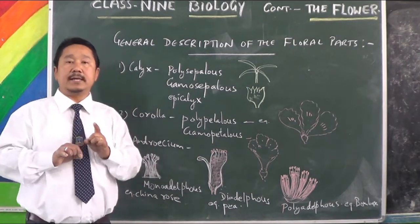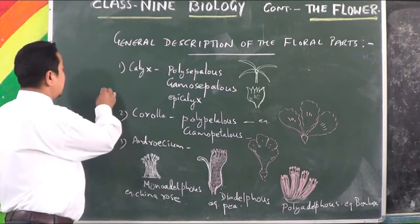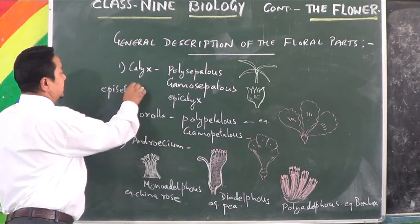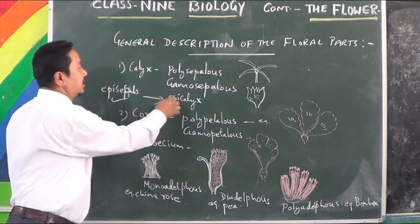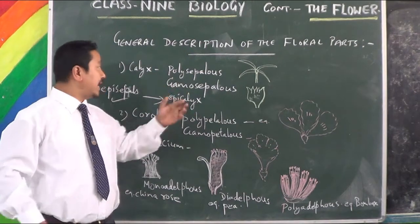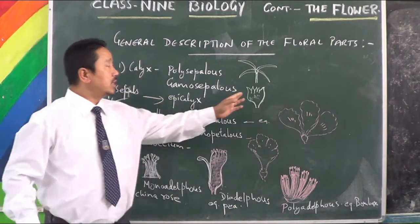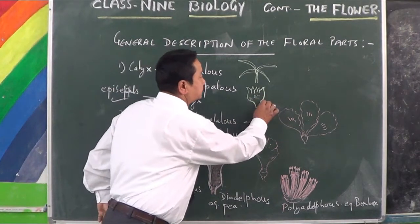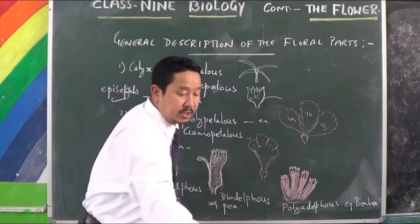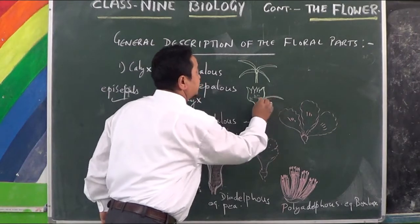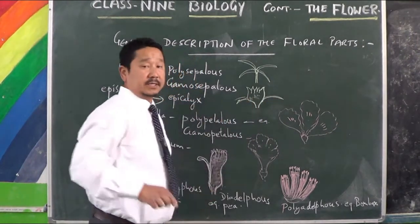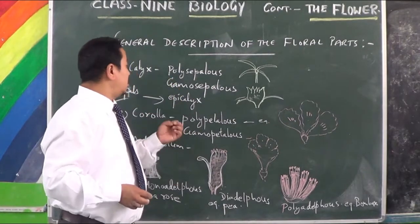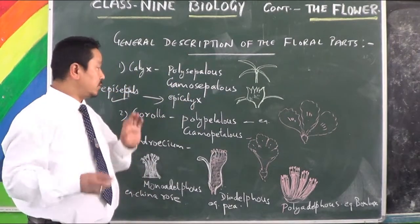And there is another structure found in some cases similar to the calyx but outside it — an extra calyx-like structure. Such a structure is called epicalyx.